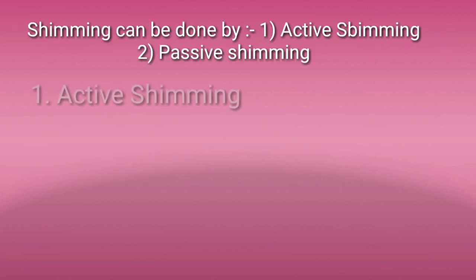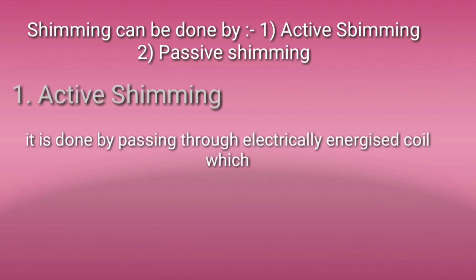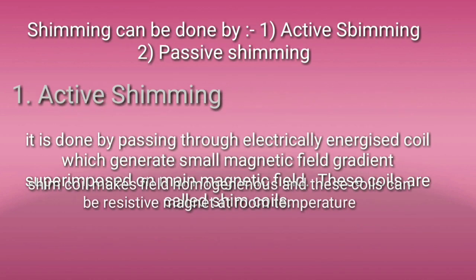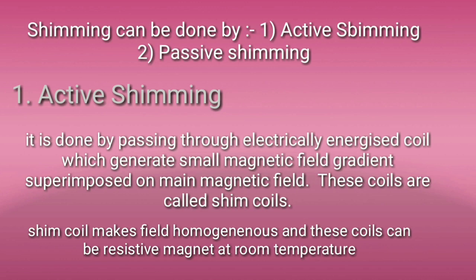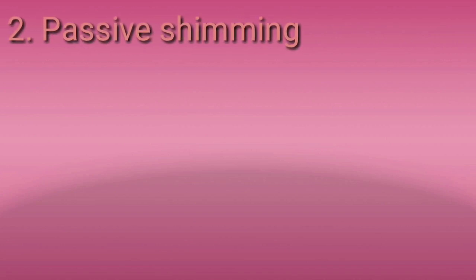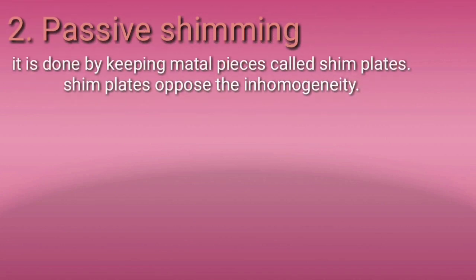Shimming can be of two types: active shimming and passive shimming. Active shimming uses electrically energized coils which generate small magnetic field gradients superimposed on the main coil — these are called shim coils. Shim coils make the field homogeneous, and these are resistive coils.